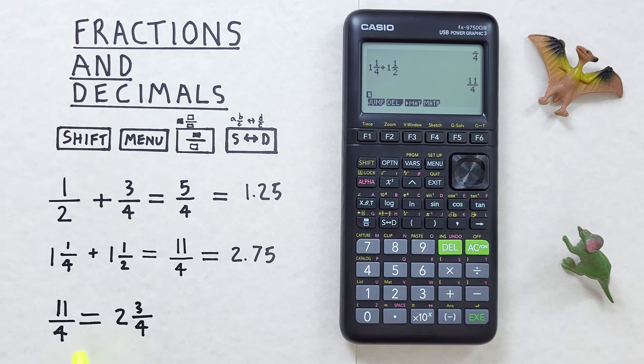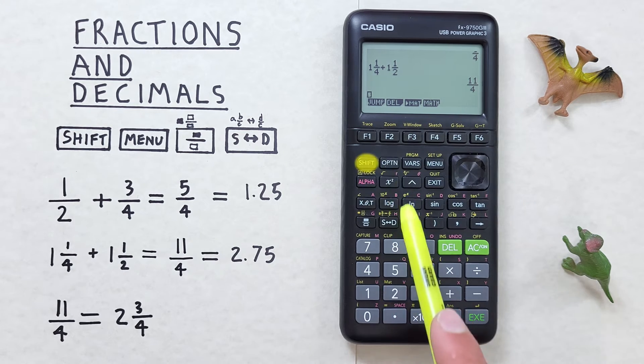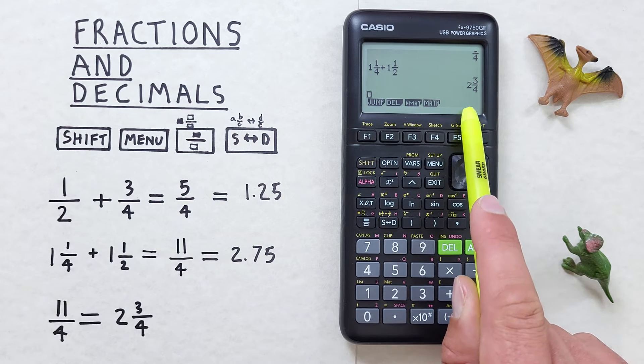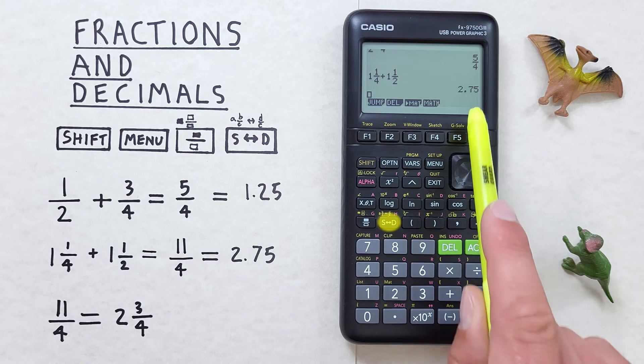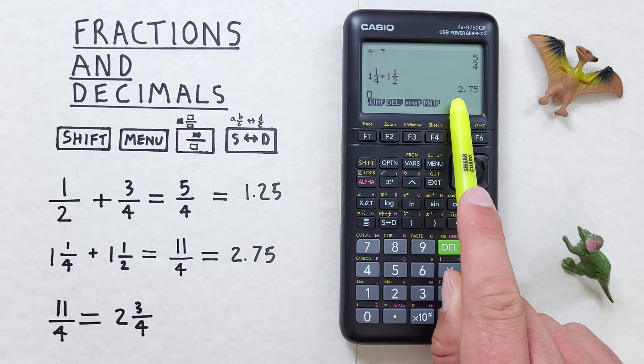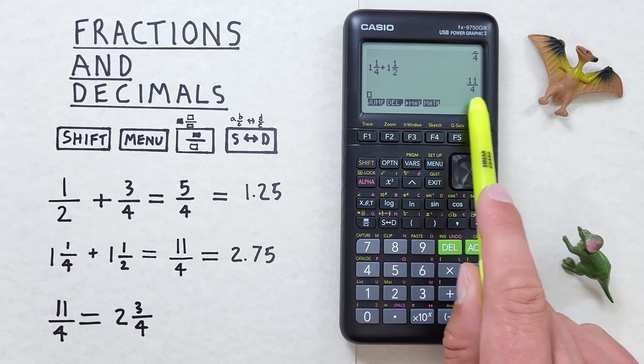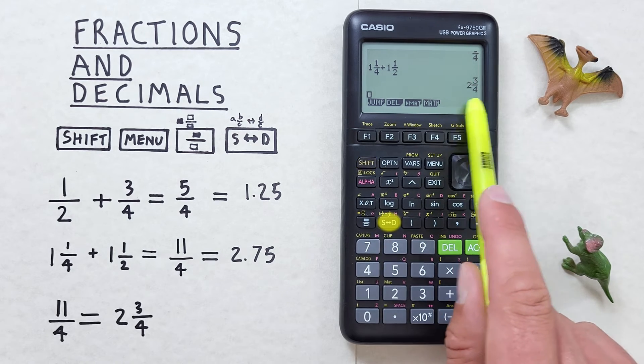But what if we want our result as a mixed number? Well to do that we use the shift function of the S to D key. So we have our 11 over 4 and we press shift S to D key and we see that converts to 2 and 3 quarters. Which again with that same S to D key converts to a decimal of 2.75, and then back to our improper fraction if we want, and then shift S to D key to our mixed number.